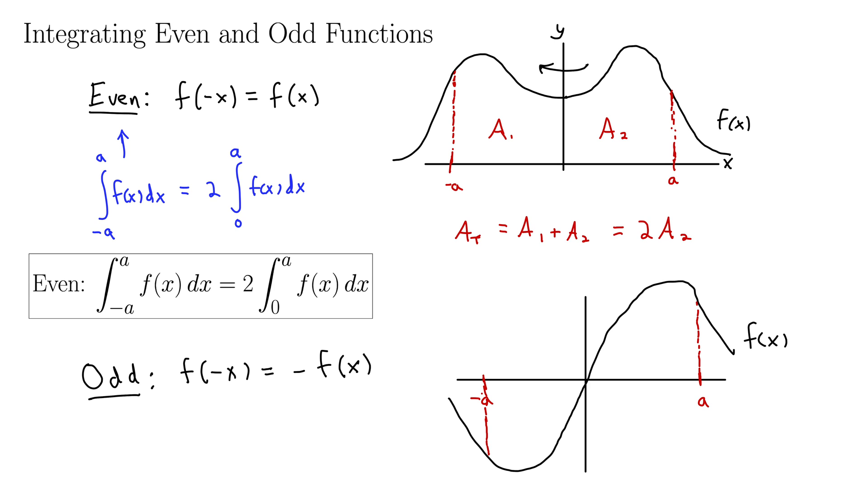But remember the area above the x-axis is positive and the area below the x-axis is negative. And these two, since it's an odd function, these two areas are exactly the same, just one is positive and one is negative.